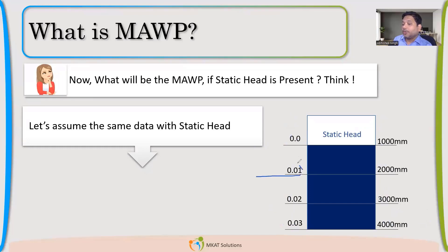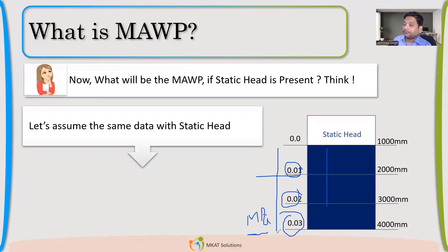The first segment static head is 0.01 MPa. The total height of two segments is 2 meters, so it will be 0.02 MPa, and the bottom segment will experience 0.03 MPa of static head. So the bottom-most part will have the highest pressure because it experiences the pressure of all three segments — 0.03, 0.02, and 0.01 MPa.